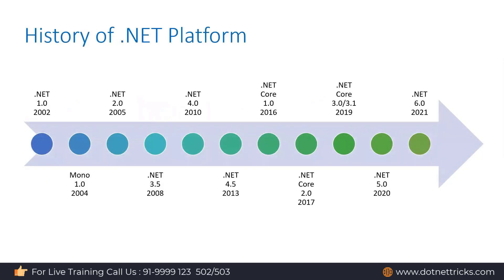If you're looking at the history of .NET, initially .NET was introduced in 2002. In 2004, we had Mono. Very few people know about Mono. Mono is a .NET version which can run outside the Windows platform, because the initial version of .NET could run only on Windows. Mono is the version that started to run on Linux machines as well.